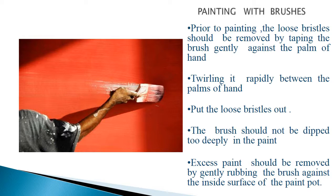Painting can be done with a brush. Prior to painting, loose bristles should be removed by tapping the brush gently against the palm of the hand and twirling it rapidly between the palms to put loose bristles out. The brush should not be dipped too deeply into the paint, and excess paint should be removed by gently rubbing the brush against the side of the paint container.